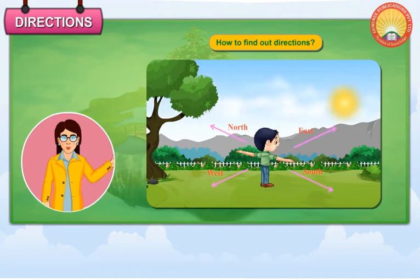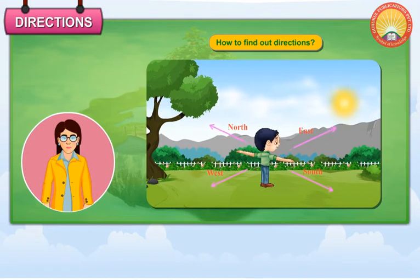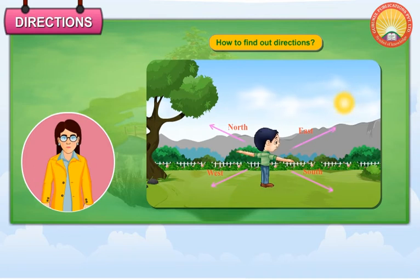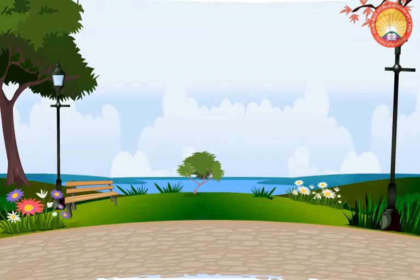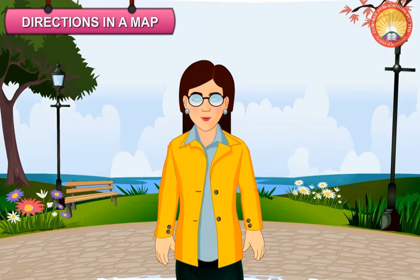N is equal to North. S is equal to South. E is equal to East. W is equal to West.